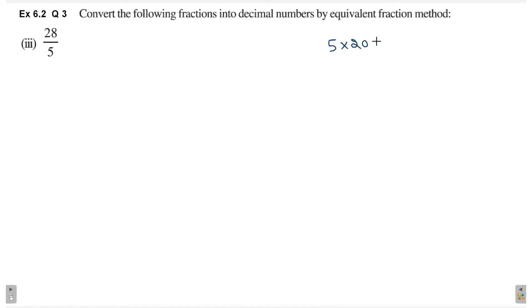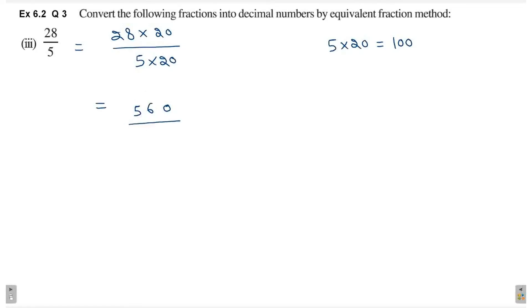Third part hai 28 by 5. Ab 5 ko agar 20 ke saath multiply karoge, so you will get 100. So, we will multiply numerator and denominator by 20. 28 into 20 divided by 5 into 20. This is equal to: 8 za 16, 1 carry; 2 za 4 plus 1, 5. So, 560 divided by 100. Numerator ka number likh lo, 560. Denominator mein 1 ke baad hai two zeros. So, right more side se two digits count karke left hand side pe lagana hai decimal. One digit, two digit, and left pe lag gaya decimal. So, this is equal to 5.60.